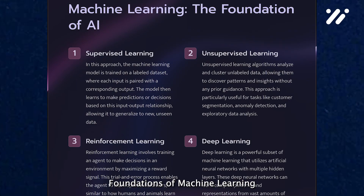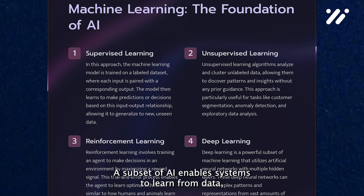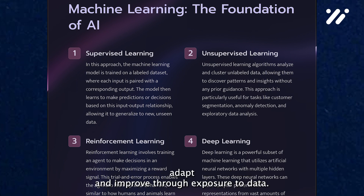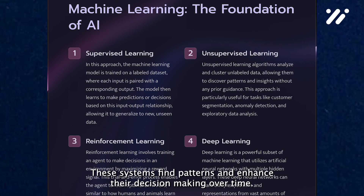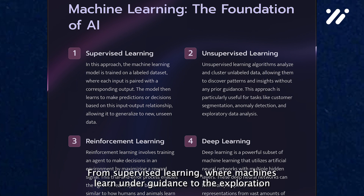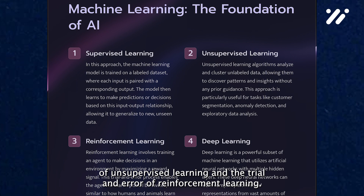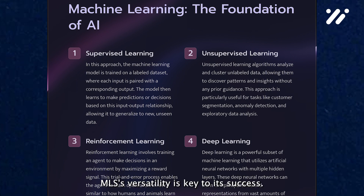Foundations of Machine Learning. Machine learning, a subset of AI, enables systems to learn from data, adapt, and improve. Through exposure to data, these systems find patterns and enhance their decision-making over time. From supervised learning, where machines learn under guidance, to the exploration of unsupervised learning and the trial and error of reinforcement learning, ML's versatility is key to its success.